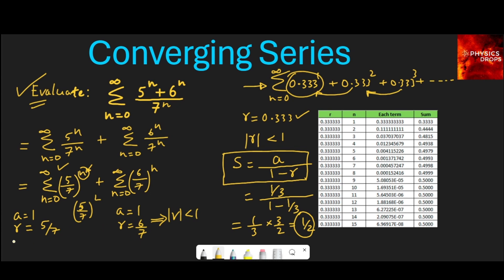So the sum here will be first term upon 1 minus 5/7. Here the sum will be 1 upon 1 minus 6 upon 7.